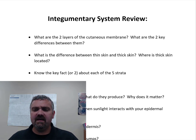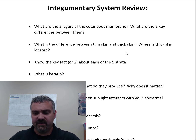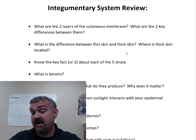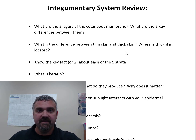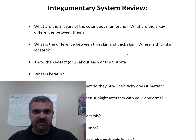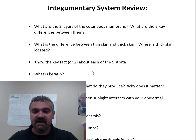What's the difference between thin skin and thick skin? Thin skin only has four strata: the stratum basale or germinativum, the stratum spinosum, the stratum granulosum, and the stratum corneum. It does not have the stratum lucidum, which is found in thick skin. Thick skin is on the palms of your hands and the soles of your feet. Also, the palms and soles don't have sebaceous glands — they don't have the oil glands.